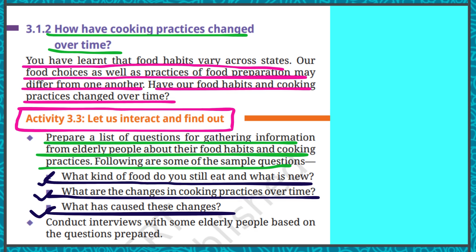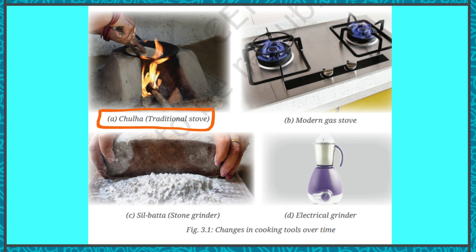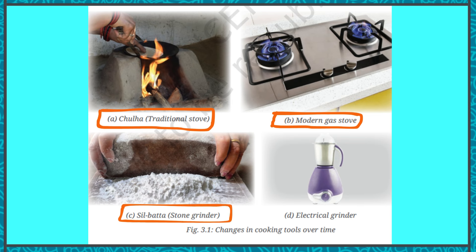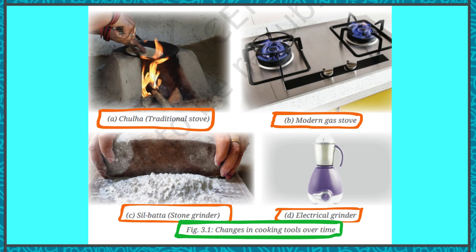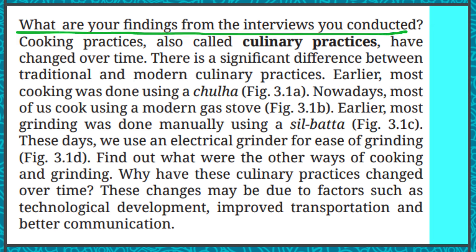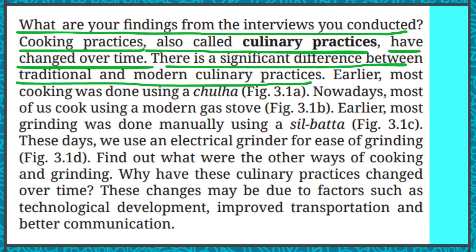Conduct an interview with elderly people based on your prepared questions. You can see from the images: earlier, cooking was done on a choolha (traditional stove), but now a modern gas stove has replaced it. Similarly, a silbatta (stone grinder) was used to grind spices manually, but now an electrical grinder is used. These show the changes in cooking tools over time. Cooking practices are also called culinary practices, and there has been a significant difference between traditional and modern culinary practices.